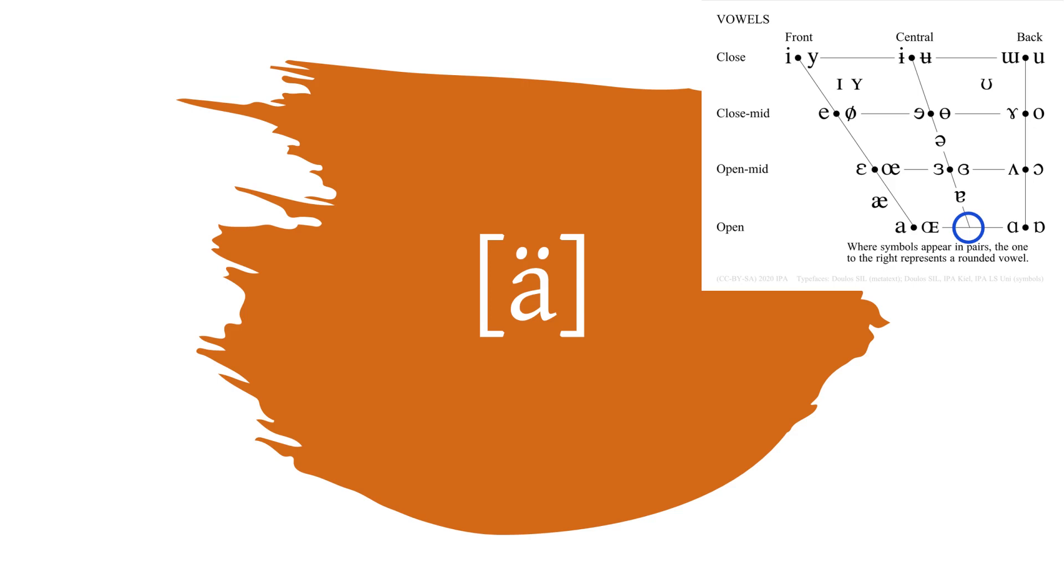Commonly, the diaresis is used on the front vowel A grapheme. This may be because this specific combination is included in Unicode.